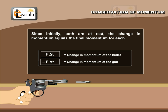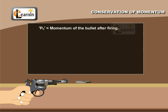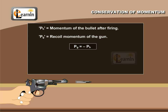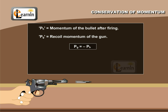Since initially both are at rest, the change in momentum equals the final momentum for each. If Pb is equal to the momentum of the bullet after firing, and Pg is the recoil momentum of the gun, then Pg is equal to negative Pb, or Pb plus Pg is equal to zero.